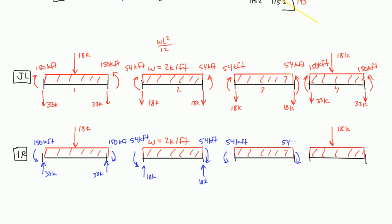This is 54 kip-foot, and then you have two vertical reactions on the left and right of both 18 kips going up. Element 4 is very similar to element 1, because the beam is symmetrical, the loading is symmetrical, and the joints are symmetrical. So that means you have reactions of 33 kips, 33 kips, and fixed-end moments of 150 kip-foot and 150 kip-foot.